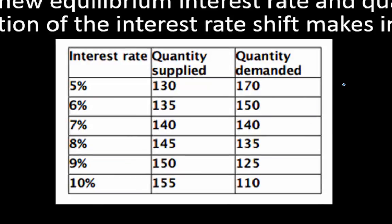Problem 4: we have a table with interest rates, quantity supplied, and quantity demanded in the financial market for home loans, measured in millions of dollars. The interest rate is the price in financial markets. We need to find where quantity supplied equals quantity demanded — that's at seven percent, where both equal 140 million. So the equilibrium interest rate is seven percent and the equilibrium quantity is 140 million dollars.